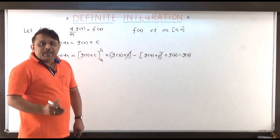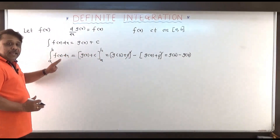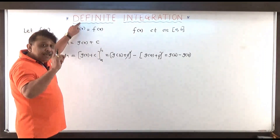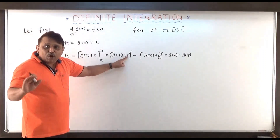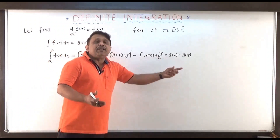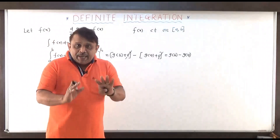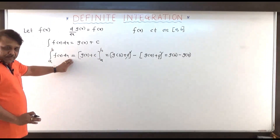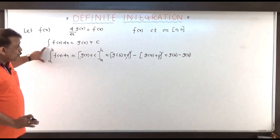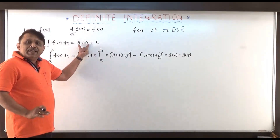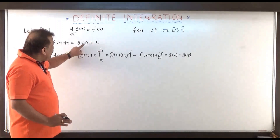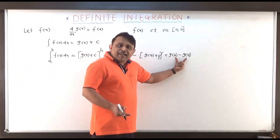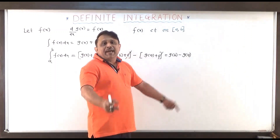I get g of b minus g of a, some fixed numbers. So this difference is defined to be the definite integral from a to b of f of x dx. The name 'definite' has come because the indefiniteness of c is gone — c is eliminated in this process. Whatever value we get is definite, hence this integration is called definite integration. We replace x by the upper limit b and lower limit a, and take the difference of the values of g at b and a.